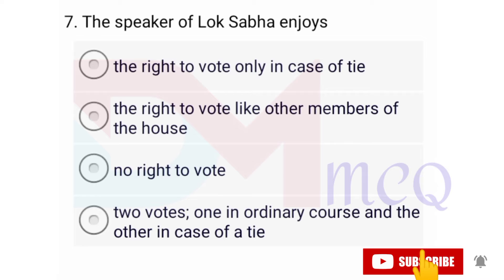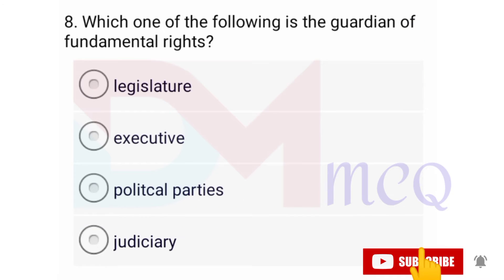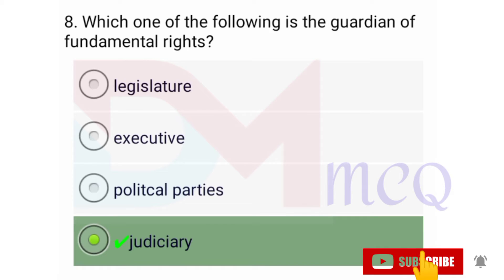Question number eight: Which one of the following is the guardian of fundamental rights? Options are legislature, executive, political parties, judiciary. Correct option is judiciary. Judiciary is the guardian of fundamental rights.